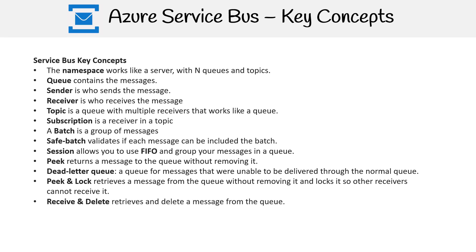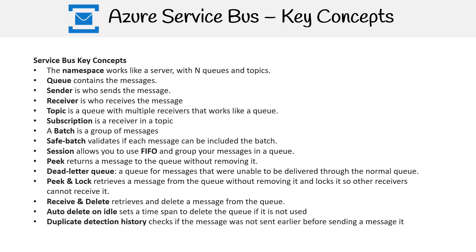Peek and Lock retrieves a message from the queue without removing it and locks it so other receivers cannot receive it. Receive and Delete retrieves and deletes a message from the queue. Auto-Delete on Idle sets a time span to delete the queue if it is not used. Duplicate detection history checks if the message was not sent earlier before sending it. Overall, this gives you a comprehensive overview of Azure Service Bus and its various components and features.